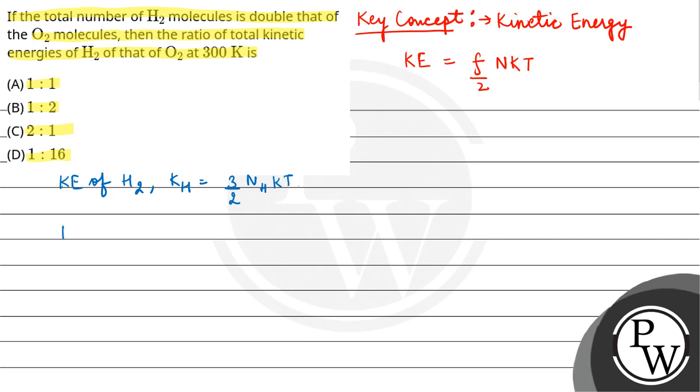KT. Now kinetic energy of O2 - how much is it? KO is equal to 3 by 2 NO KT. Now you are given that total number of H2 molecules, which is NH...